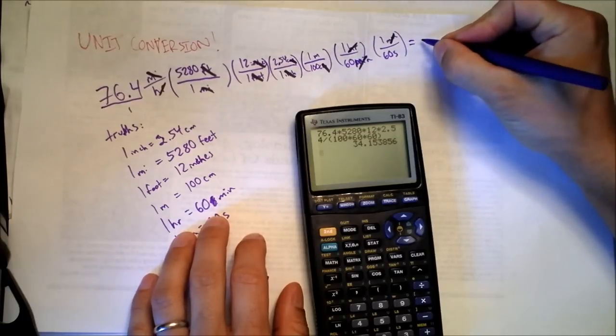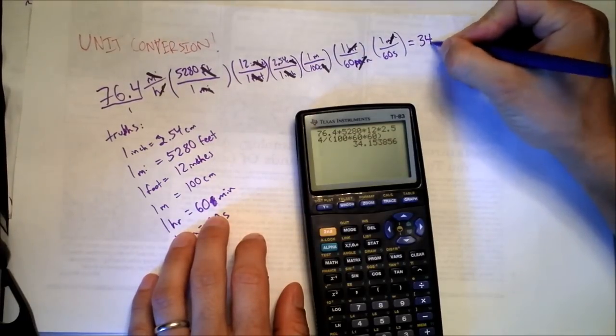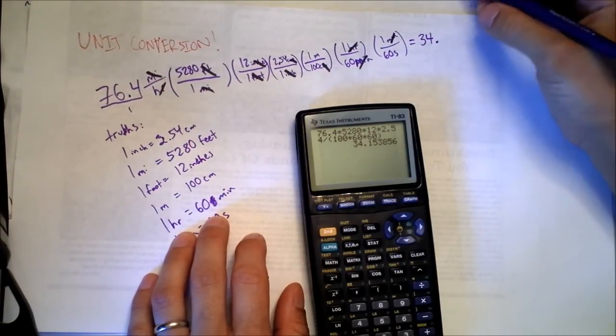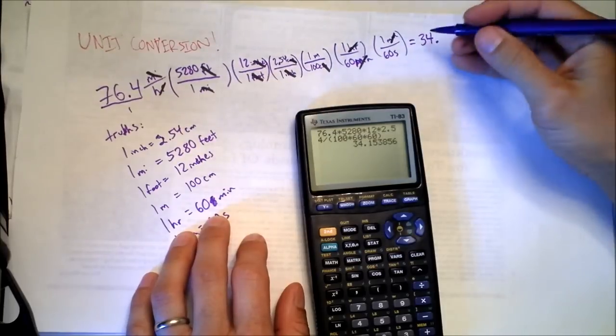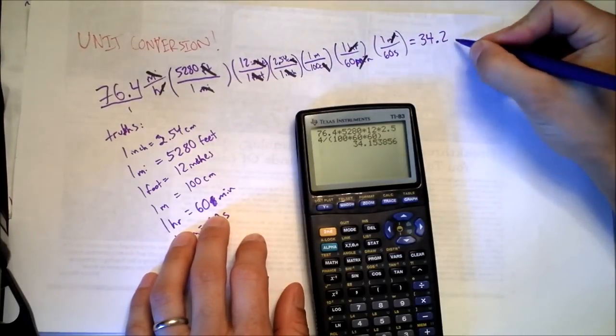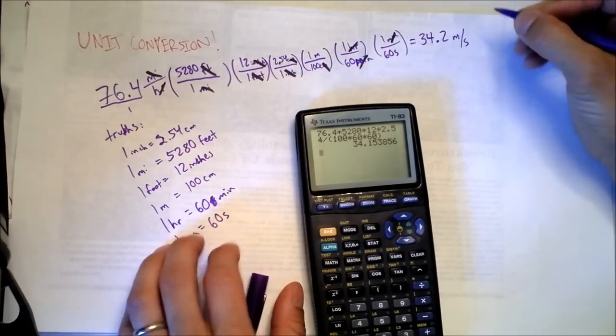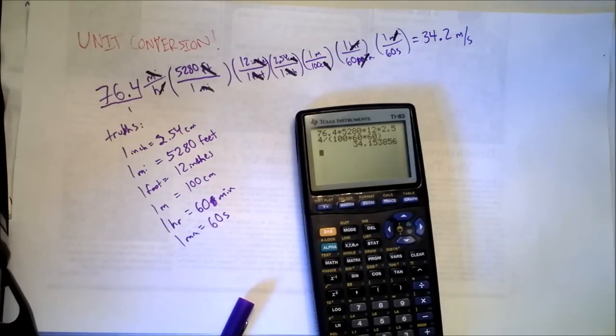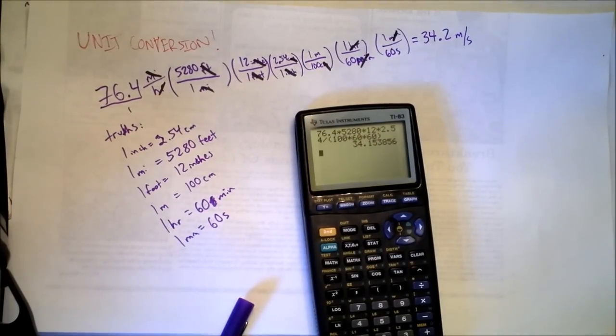That is our answer in meters per second. It turns out everything's fine - you're only going 34, we need three significant figures, 34.2 meters per second. And everything's going to be fine because you can slow down now. Don't speed. Sometimes people die. Be careful.